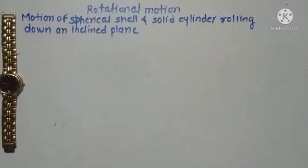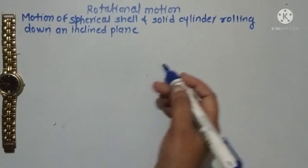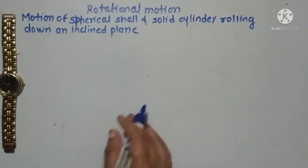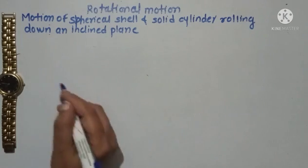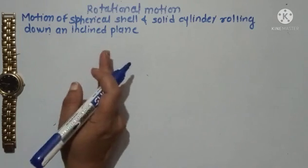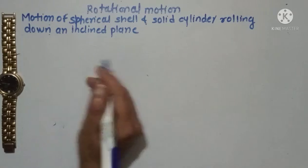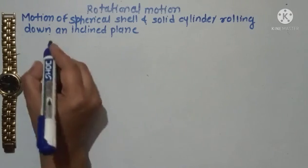In the previous lectures, we have seen the moment of inertia of different shapes like a spherical shell and solid cylinder about the different axes of rotation. In this lecture, we are going to see the motion of a spherical shell and a solid cylinder rolling down on an inclined plane.